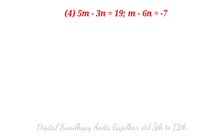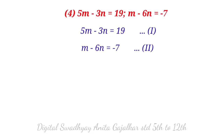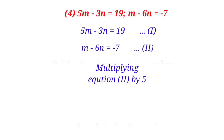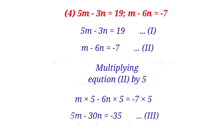Next problem: 5m minus 3n equal to 19 (equation first), m minus 6n equal to minus 7 (equation second). The coefficient of m in equation first is 5, so we multiply equation second by 5. This gives 5m minus 30n equal to minus 35 (equation 3).